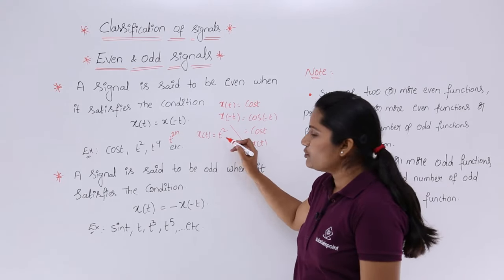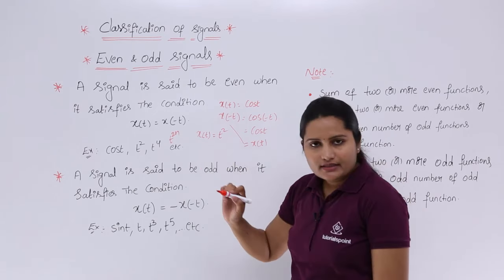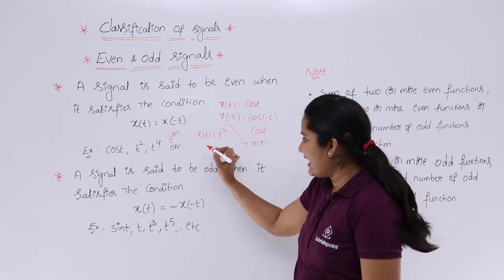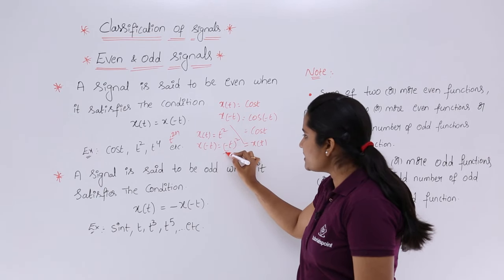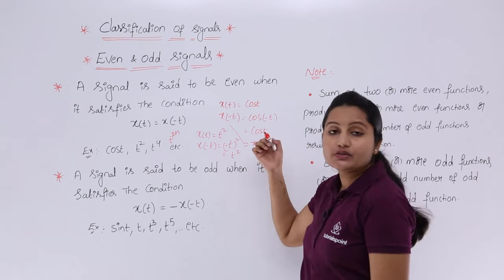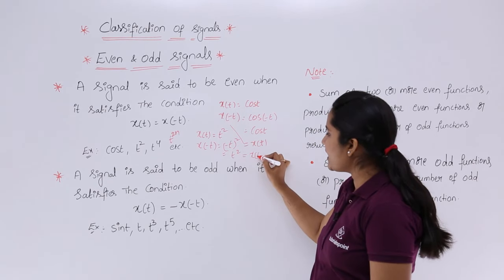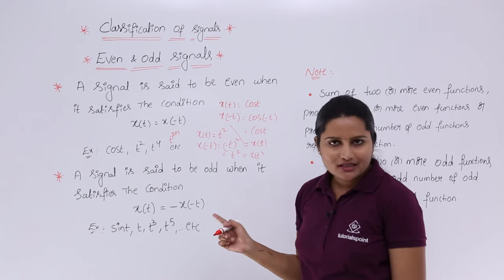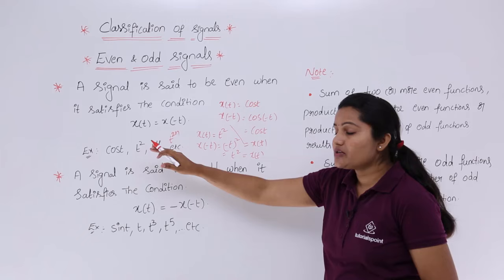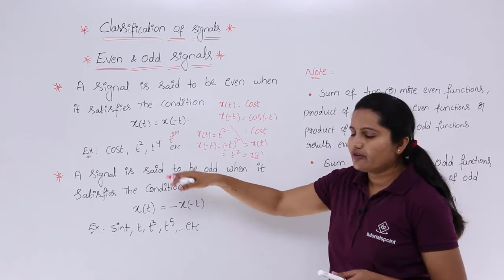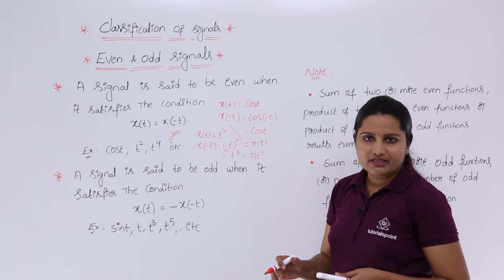For example, considering x(t) = t². If you are calculating x(-t), you are going to get (-t)², which equals +t². So t² is the same as the original signal — this signal satisfies the condition x(t) = x(-t). So this is also an even signal. Similarly, t⁴, t⁶, t⁸, and t^(2n) signals are all even signals.